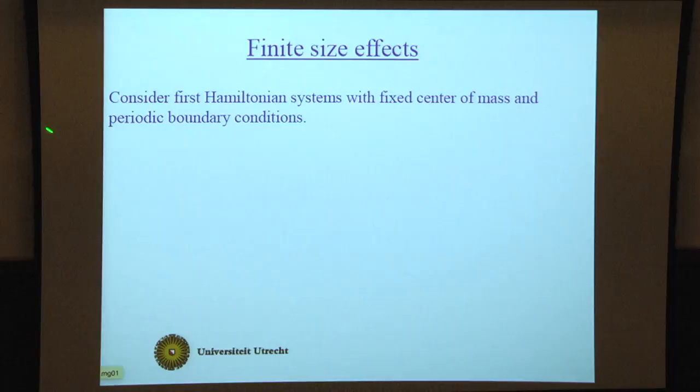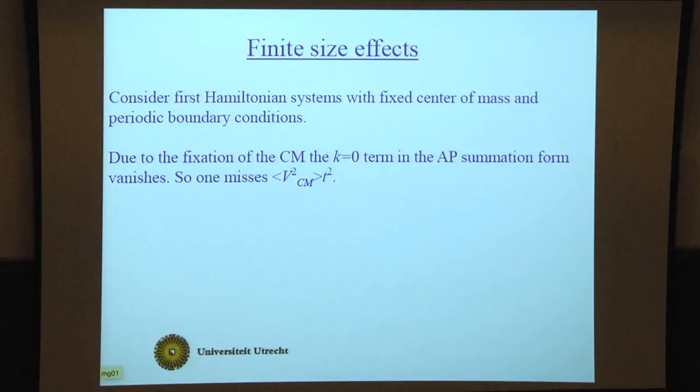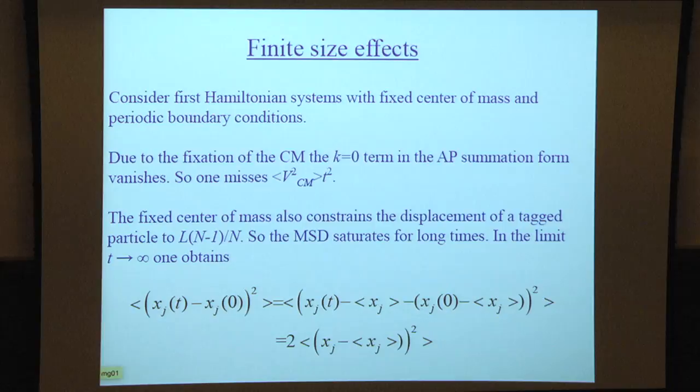I first have to discuss the finite size effects because they are extremely large. I consider Hamiltonian systems with a fixed center of mass and periodic boundary conditions, typically the conditions for simulations. Because the center of mass is fixed, the k equals zero term in the Alexander-Pincus summation vanishes. So one misses a contribution in the infinite system limit: the center of mass velocity squared average times t squared. So one has to add this by hand to get agreement with the asymptotic expressions for infinite systems.